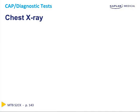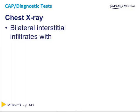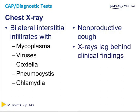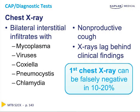While the chest x-ray we just looked at is consistent with a focal lobar bacterial pneumonia, sometimes the chest x-ray will be much less focal and will actually have bilateral interstitial infiltrates. This is usually seen in mycoplasma, viruses, Coxiella, Pneumocystis, and Chlamydia. These patients are diagnosed with atypical pneumonias and usually have a non-productive cough, and their x-rays can actually lag behind the clinical findings. Remember, the first chest x-ray can be falsely negative in 10–20% of patients, so if the patient does not improve with empiric antibiotic choices, you may want to pursue a second chest x-ray.